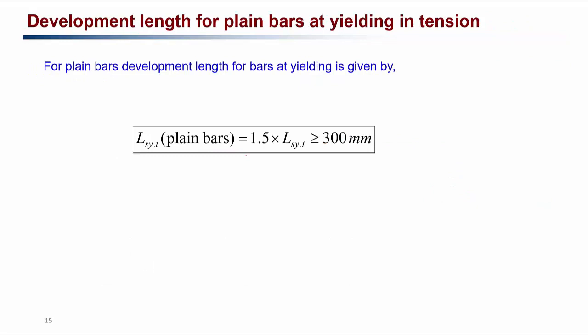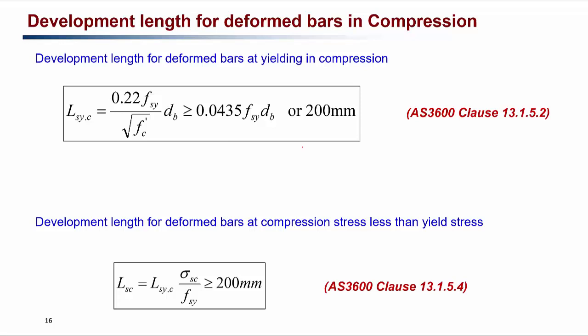If plain bars are used, a longer development length is needed because plain bars do not have the efficient bonding mechanism of deformed bars. AS3600 gives the development length for plain bars as 1.5 times the development length required for deformed bars, and it should be greater than 300 mm. If the bars are in compression, separate equations apply: the first for bars yielding in compression, and the second for compression stress less than yield — again using a pro-rata basis.